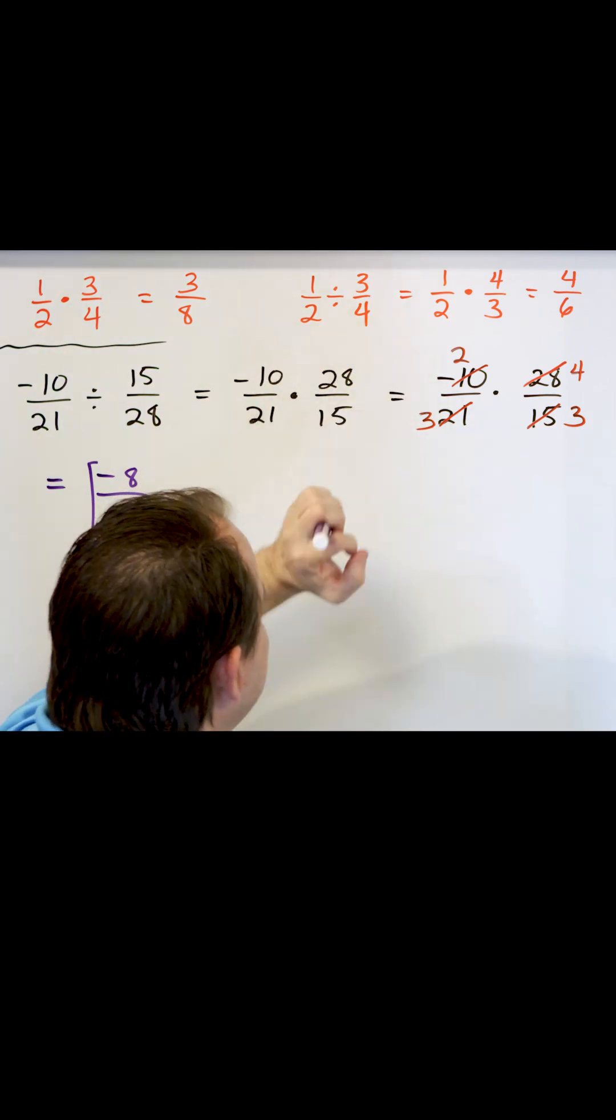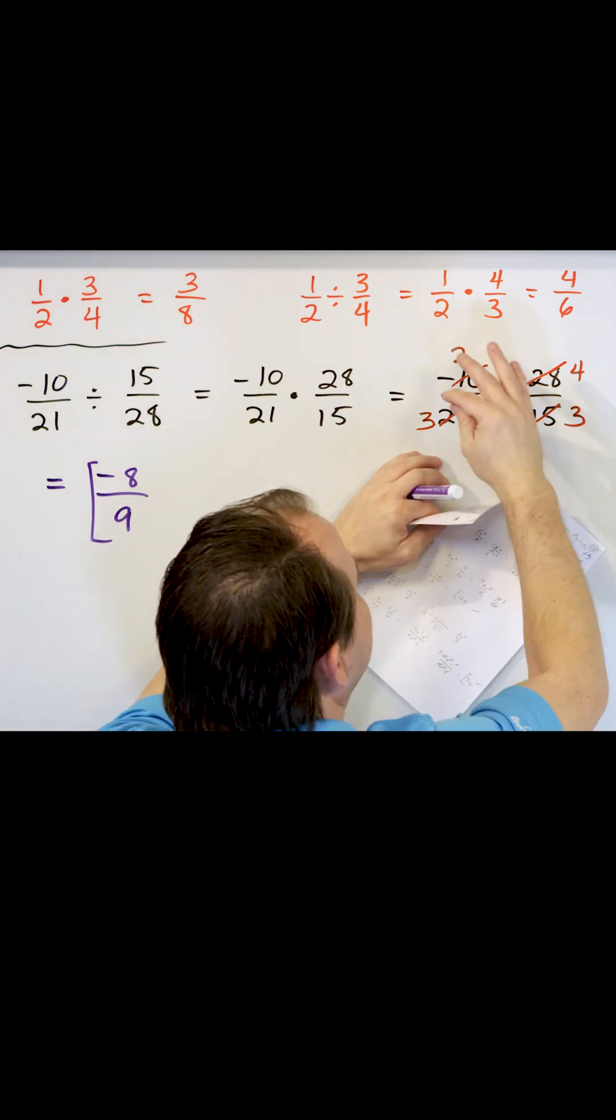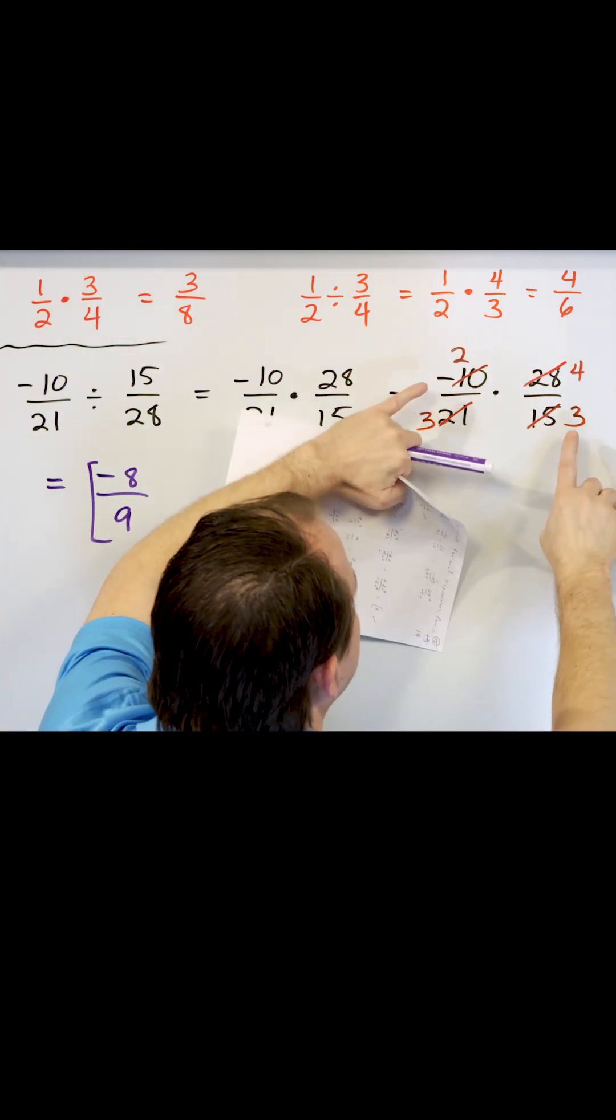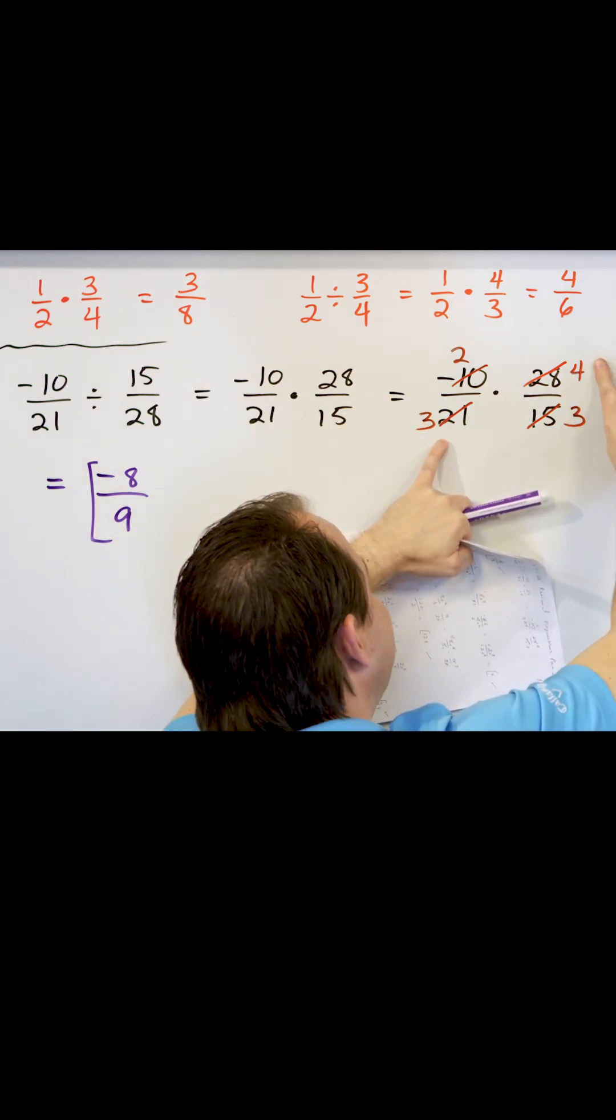But instead of multiplying ahead of time and then simplifying the answer, what we chose to do is start simplifying even before we do the multiplication. So these can be simplified by dividing by five. These can be simplified by dividing by seven.